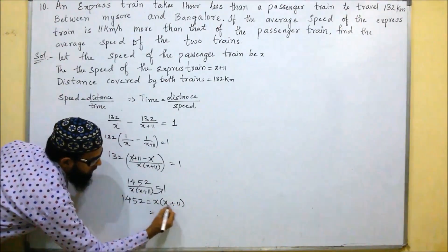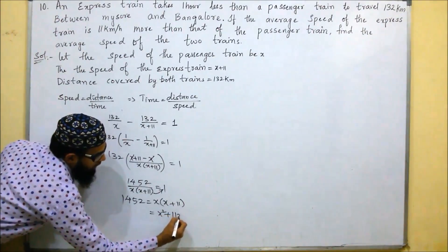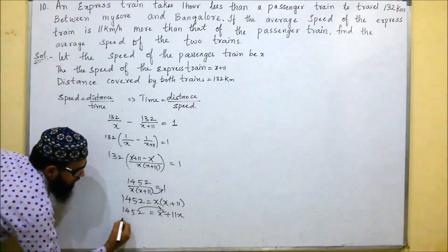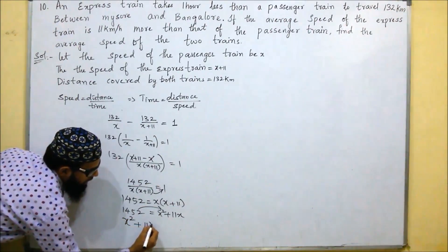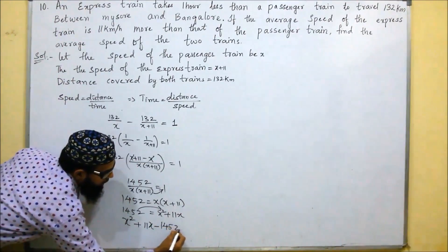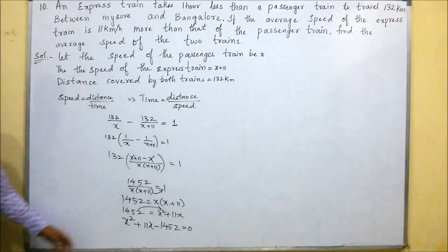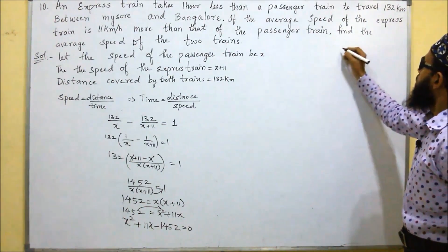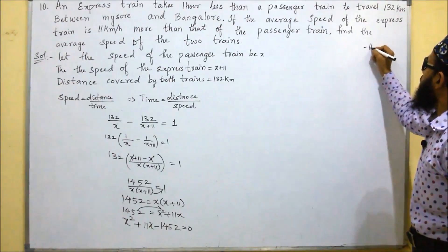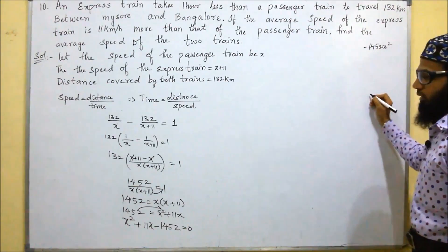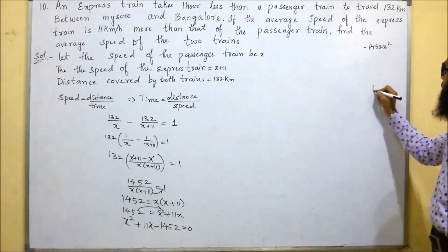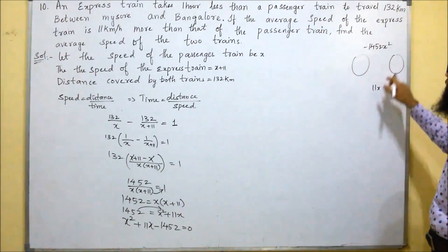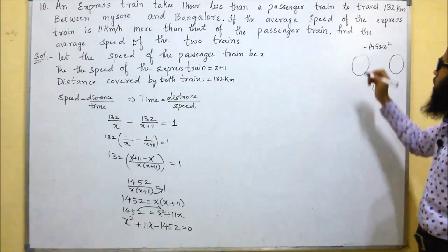Multiplying out, we get x squared plus 11x. Moving 1452 to the other side gives us x squared plus 11x minus 1452 equals 0. To factor this, we multiply the first and last terms to get minus 1452x squared, and the middle term is 11x. We need two terms that multiply to give minus 1452x squared and add to give 11x.